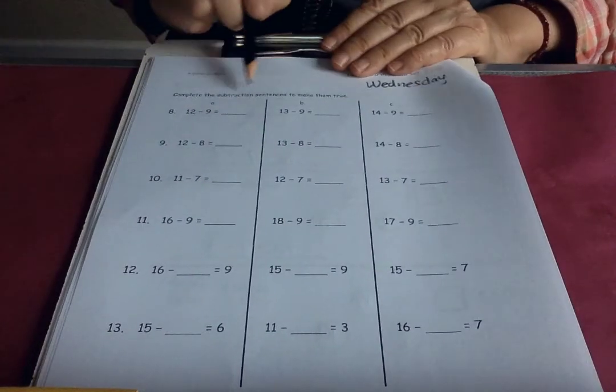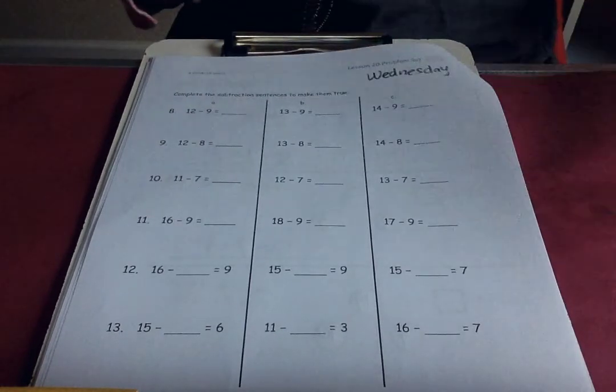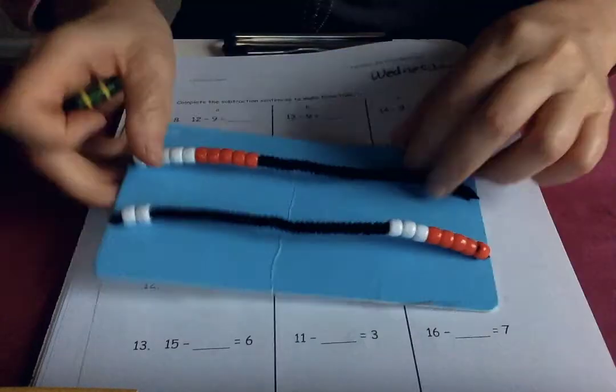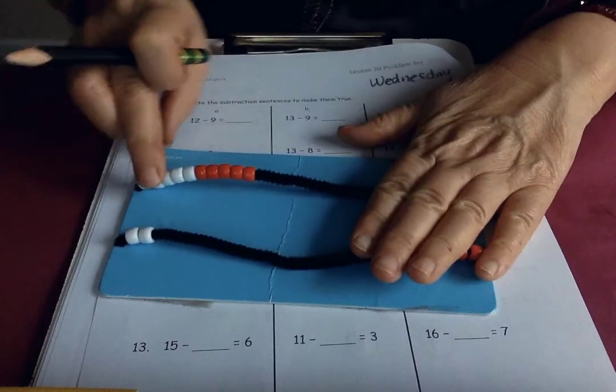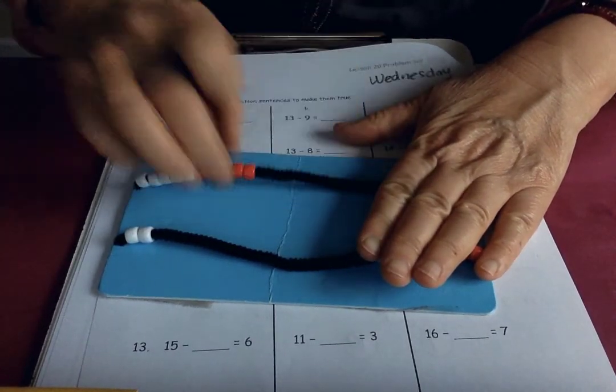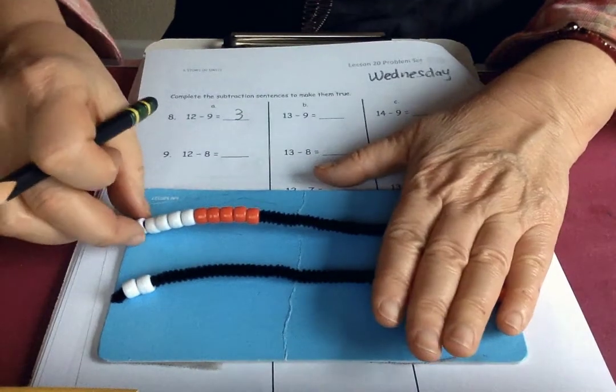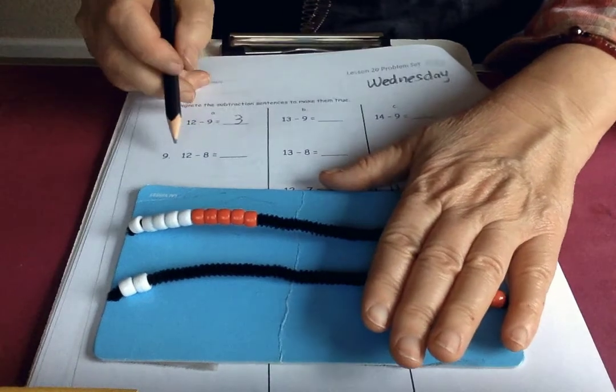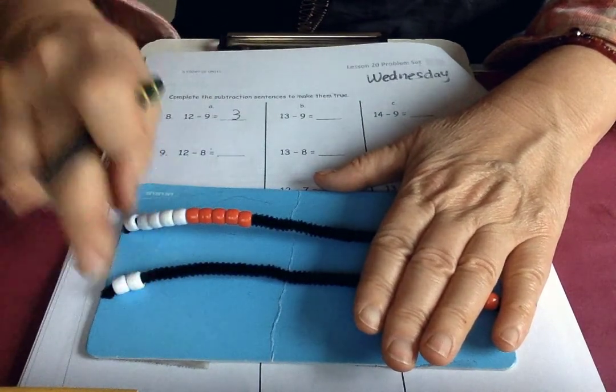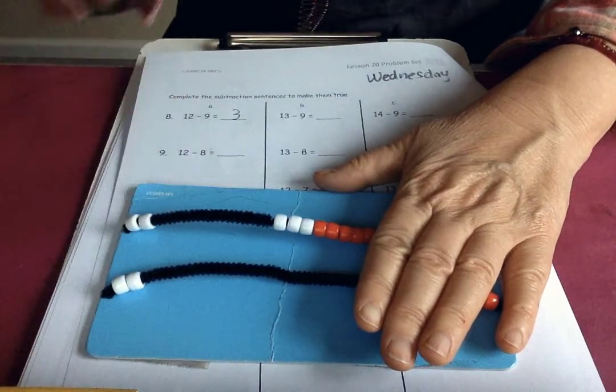Complete the subtraction sentence to make them true. Twelve take away nine. You can use your math rack and then you just take away nine and you'll see it's three. You can just use your math rack. If you've seen a pattern and you can use that, go ahead. Twelve take away eight. Let's take away eight. Four.